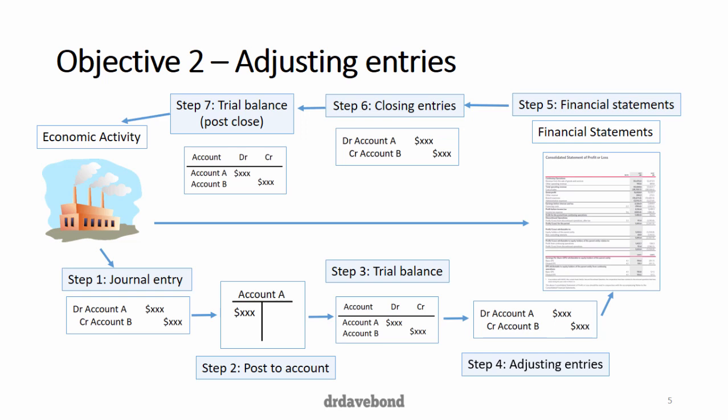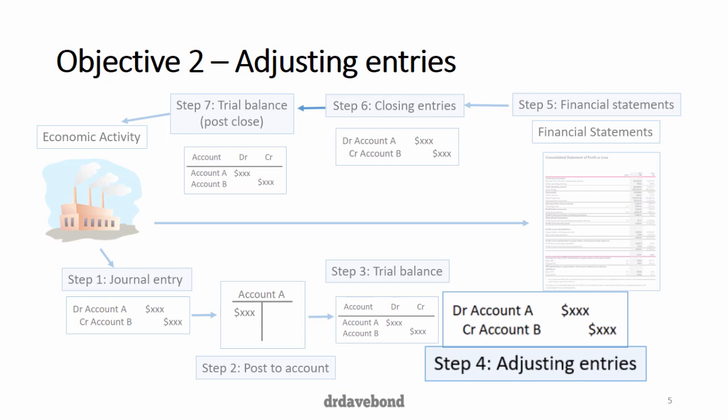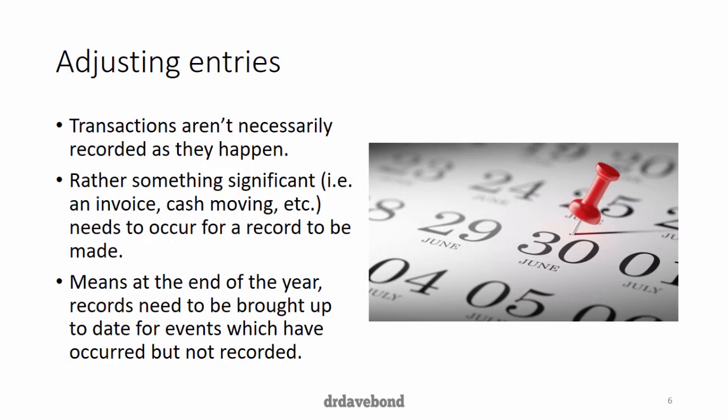This is a recap from the previous topic about the steps in the accounting cycle. In the previous topic, we went through steps one, two, and three, and in a way we jumped into step five when we prepared some financial statements. What we get to today is step four — the adjusting entries. I'm going to work on the basis that you're comfortable with what gets debited and credited and what goes up and down for different types of accounts.